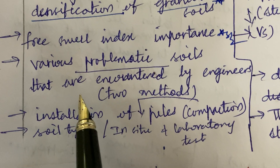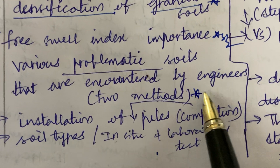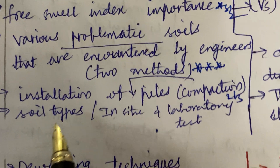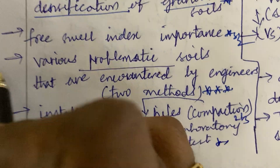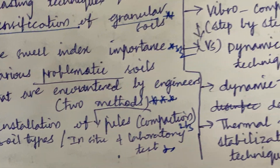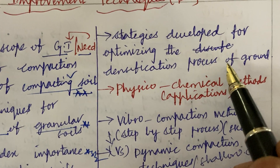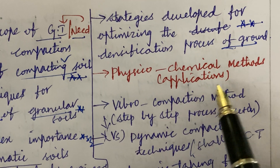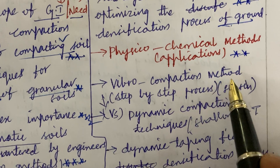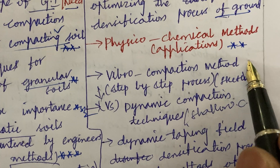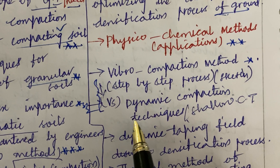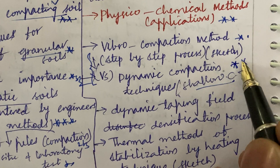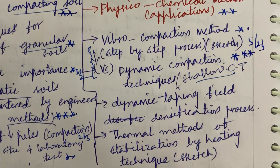Various problematic soils encountered by engineers and NE2 methods is said to be a topmost gunshot question. Installation of compaction pile may be a 2 to 3 mark question. Soil types and in-situ as well as laboratory tests carry marks from this part. Strategies for optimizing the densification process is a topmost question. Physical or chemical methods and their applications, and vibro compaction methods — step-by-step procedure, sketch the diagram — and differences between vibro compaction, dynamic compaction, and shallow compaction technique are also important.